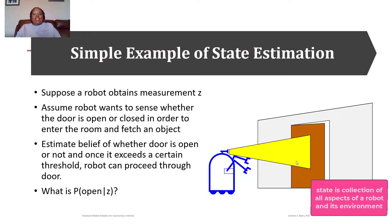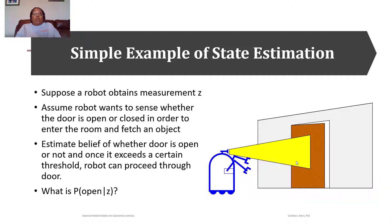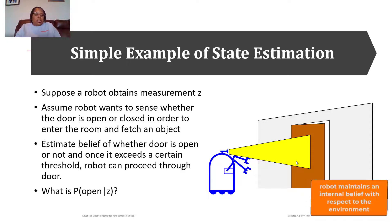As a simple example of state estimation, suppose we have a robot that obtains a measurement Z at a door, and the robot is trying to sense whether the door is open or closed in order to go into the room and fetch an object. We want to estimate a belief about whether the door is open or closed.